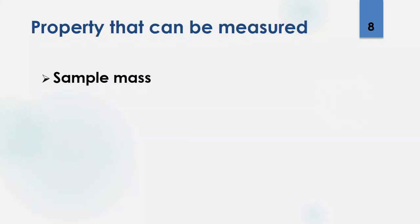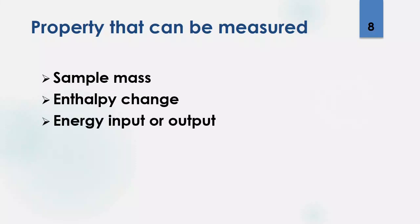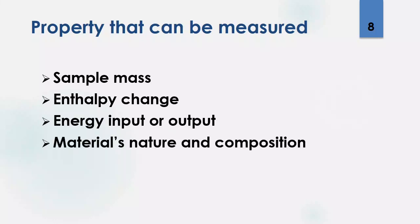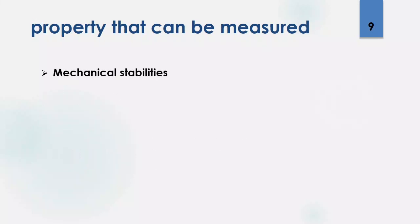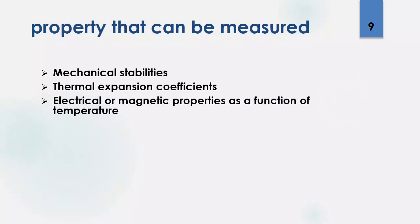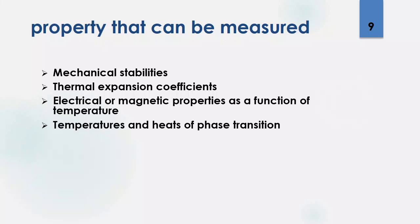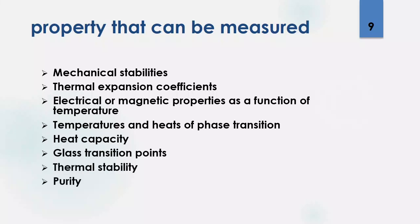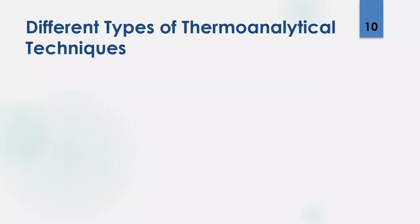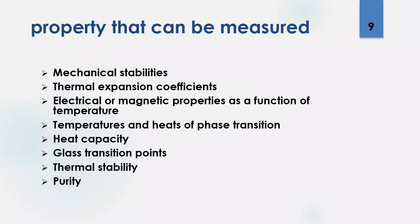What types of properties can we measure using thermal analytical techniques? These include mass, enthalpy change, energy input or output, chemical analysis, material nature and composition, phase properties, mechanical stability during the thermodynamic process, thermal expansion coefficient, electrical or magnetic properties as a function of temperature, temperature and heat of phase transition, heat capacity, glass transition point, thermal stability, and purity. These are the main properties which can be measured during thermal analytical techniques, and in the future we will go into detail on each one.